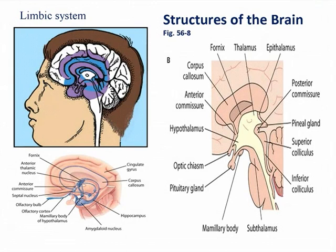Other structures of the brain include the limbic system, which is mostly responsible for our emotions. The basal ganglia are a pair of structures centrally located in the cerebrum and the midbrain on both sides of the thalamus. Their function is to modulate, initiate, execute, and complete voluntary and automatic movements with skeletal activities — such as swinging our arms when we walk, swallowing saliva, and blinking. This will become important when we study Parkinson's disease.